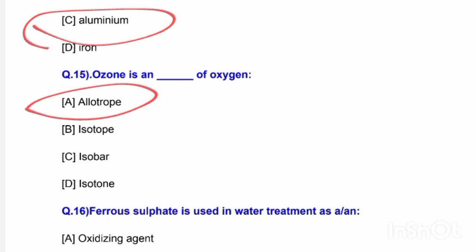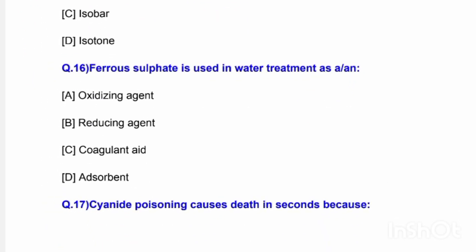Next question: Ferrous sulphate is used in water treatment as a — options are oxidizing agent, reducing agent, coagulant aid, or adsorbent. The correct answer is option C — coagulant aid.